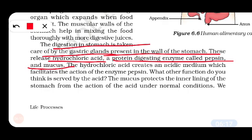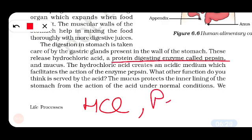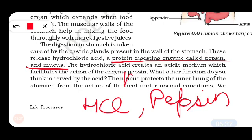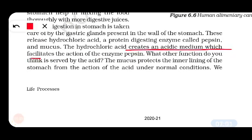When food enters the stomach, there are 3 things released: firstly, hydrochloric acid which we call HCl; secondly, pepsin, which is a protein-digesting enzyme; and thirdly, mucus. The hydrochloric acid creates an acidic medium which facilitates the action of the enzyme pepsin. Pepsin is the enzyme which digests protein.